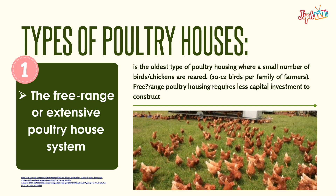We have types of poultry houses. First, the free-range or extensive poultry house system — the oldest type of poultry housing where a small number of birds or chickens are reared, 10 to 12 birds per family of farmers. Free-range poultry housing requires less capital investment to construct.